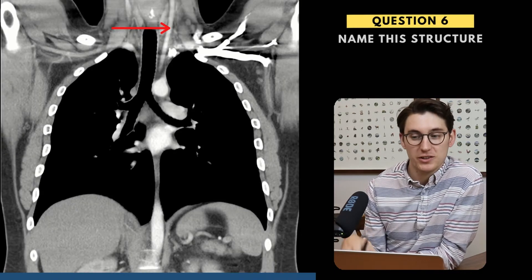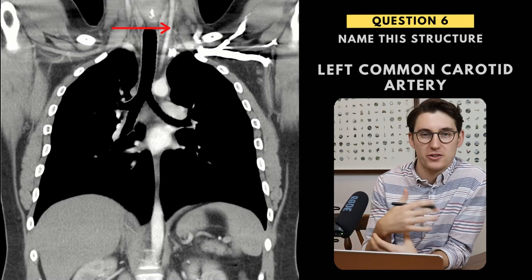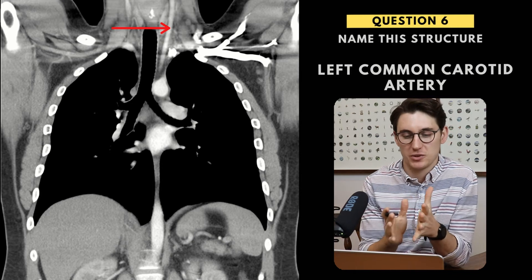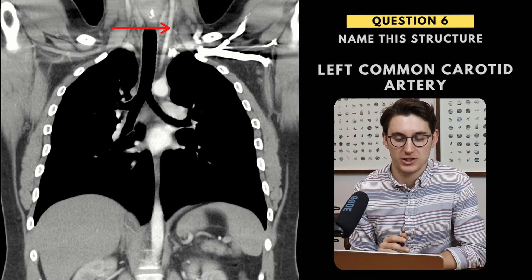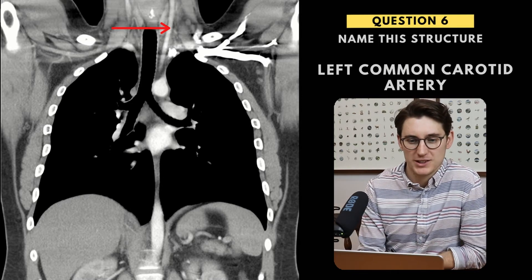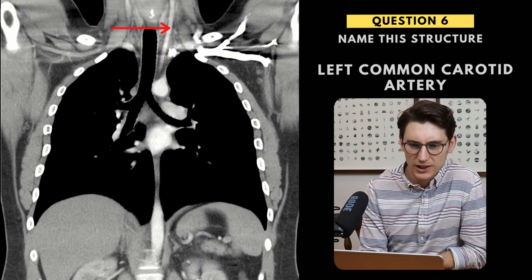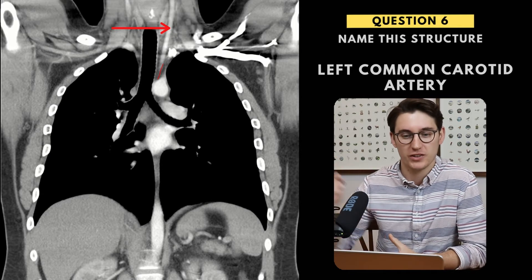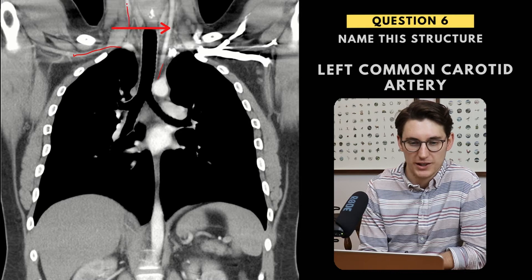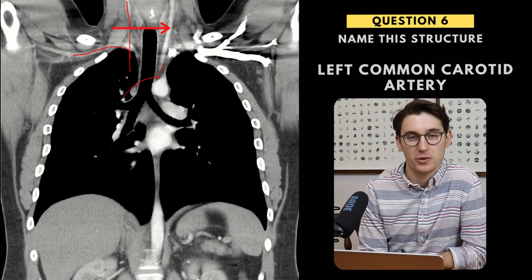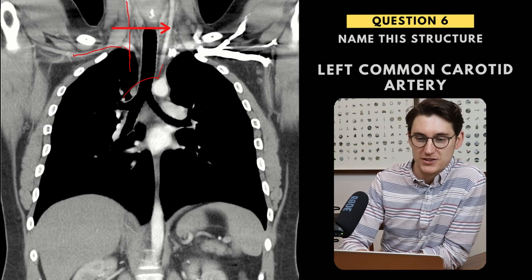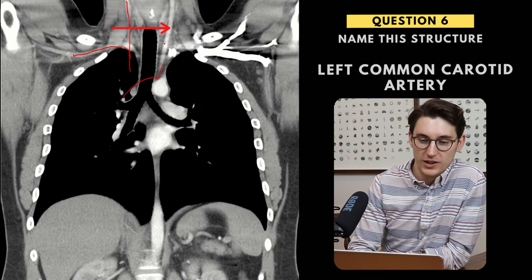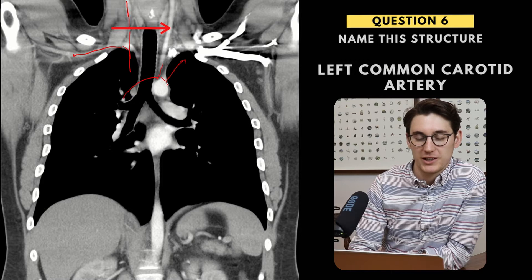Question six — label this vessel. Here we have the left common carotid artery. I've specifically chosen this image because there's no such thing as just a 'carotid artery' — you need to say it's either a common carotid artery or an internal or external carotid artery. In this arterial phase image, we can see the left common carotid artery, which came straight off the arch of the aorta. On the right side, we've got the right subclavian and right common carotid artery, which are both branches off the brachiocephalic trunk. On the left side, the left common carotid comes directly off the aortic arch, followed by the left subclavian also coming directly off the aortic arch.